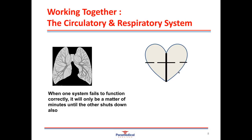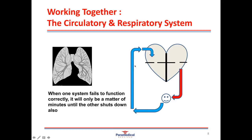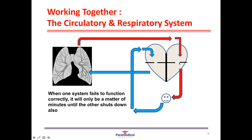The circulatory and respiratory systems work very closely together. The heart pumps oxygen-rich blood to the brain, vital organs, fingers and toes. Cells use the oxygen and return carbon dioxide to the bloodstream, which travels via veins back to the heart and then to the lungs to be re-oxygenated. When one system fails the other shuts down very rapidly — if a patient stops breathing, their heart will stop working properly within a minute or two.